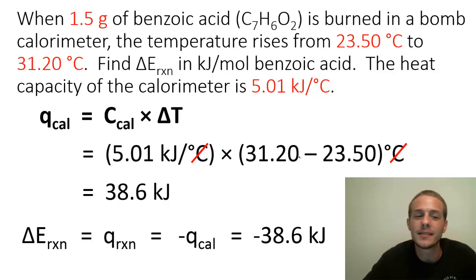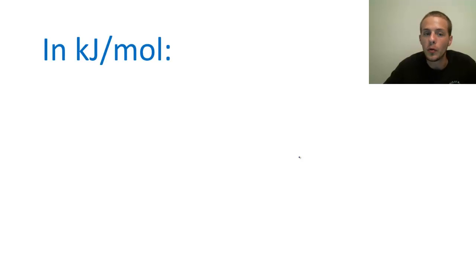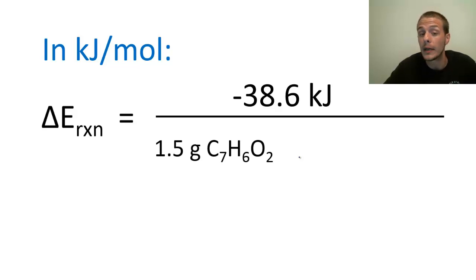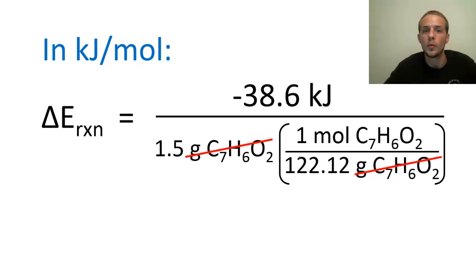We're not quite finished because the problem asks for delta E in kilojoules per mole of benzoic acid. We need to take negative 38.6 kJ and divide it by the amount of benzoic acid in moles. The moles aren't given directly, but we can calculate them from the 1.5 grams of benzoic acid and its molar mass of 122.12 g/mol from the periodic table. Placing grams in the denominator and moles on top, the grams cancel, leaving us with units of kilojoules per mole.